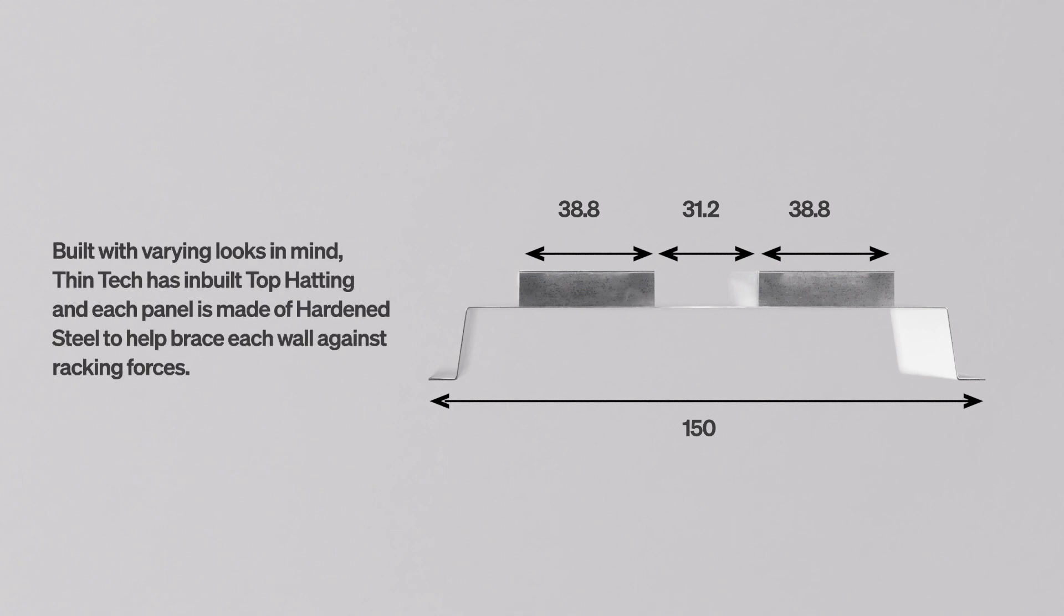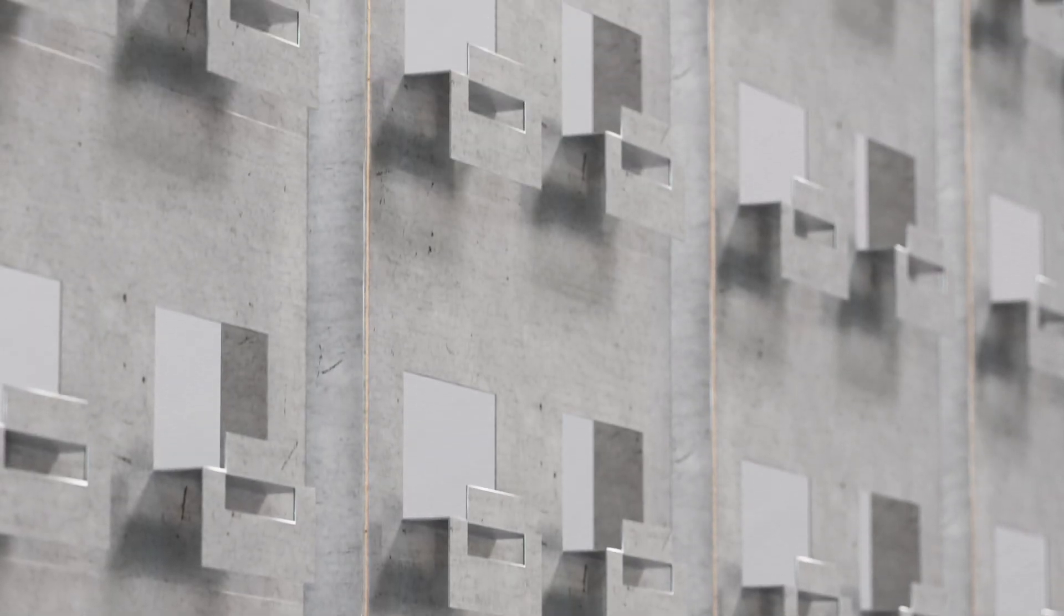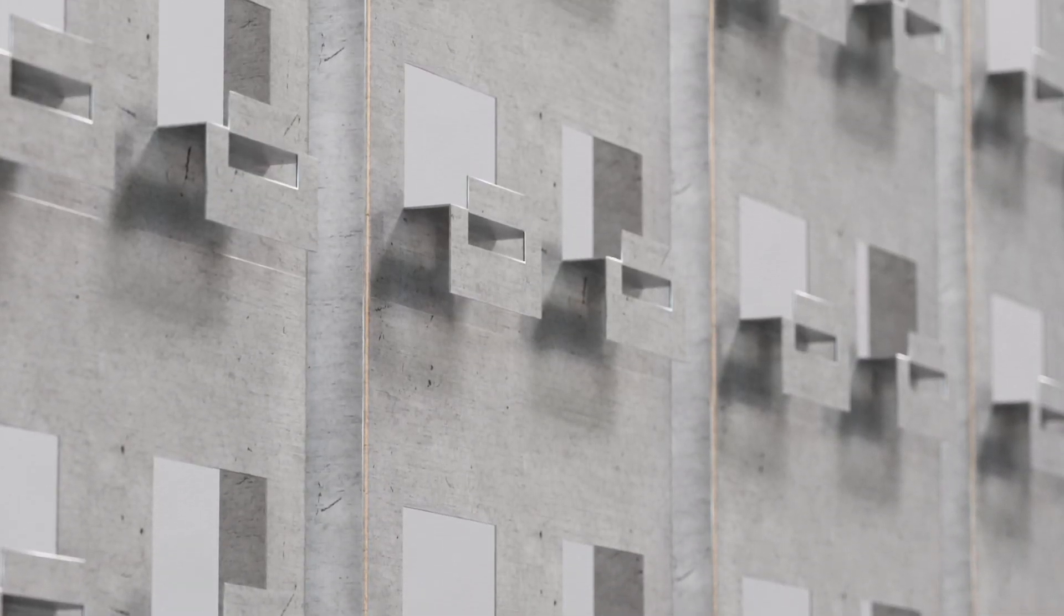Built with varying looks in mind, ThinTech has in-built top-hatting and each panel is made of hardened steel to help brace each wall against raking forces.